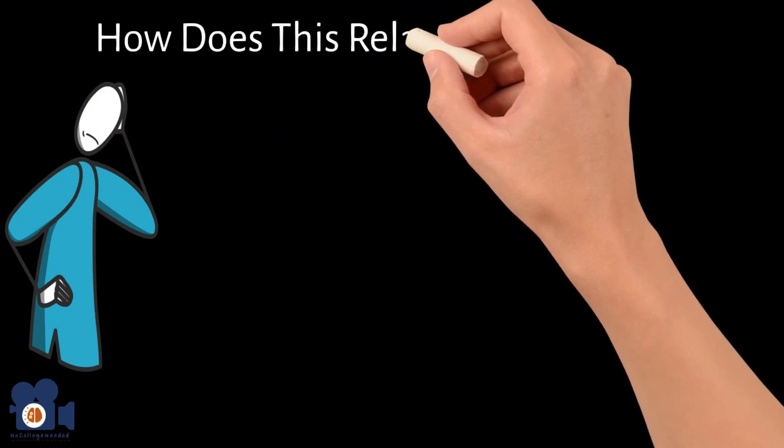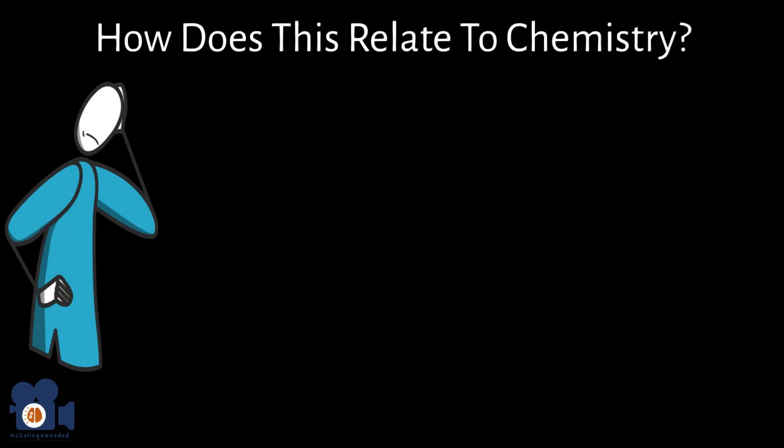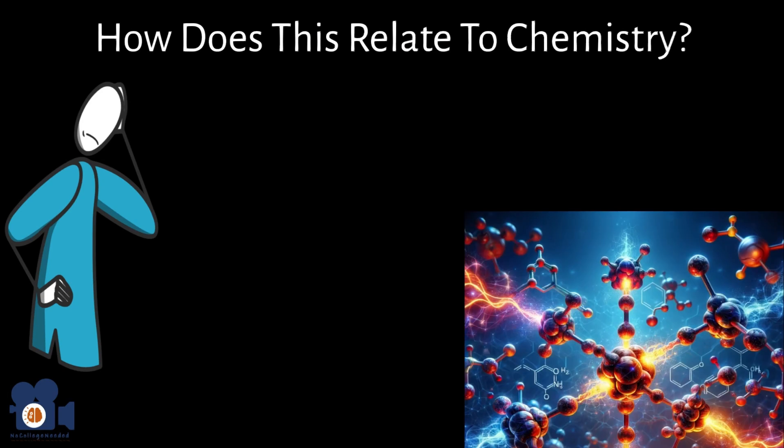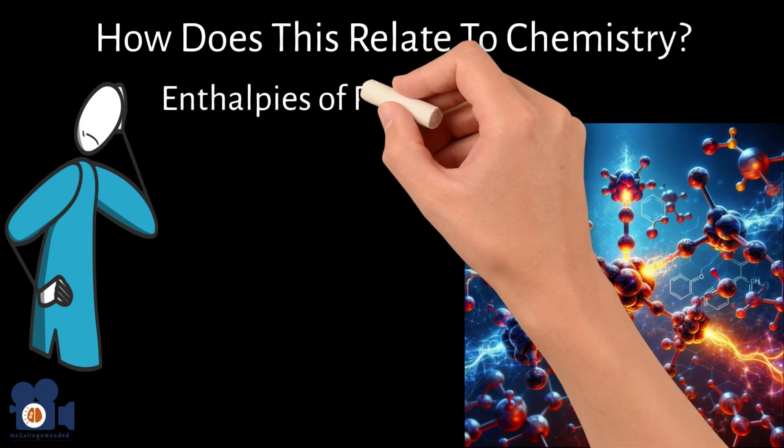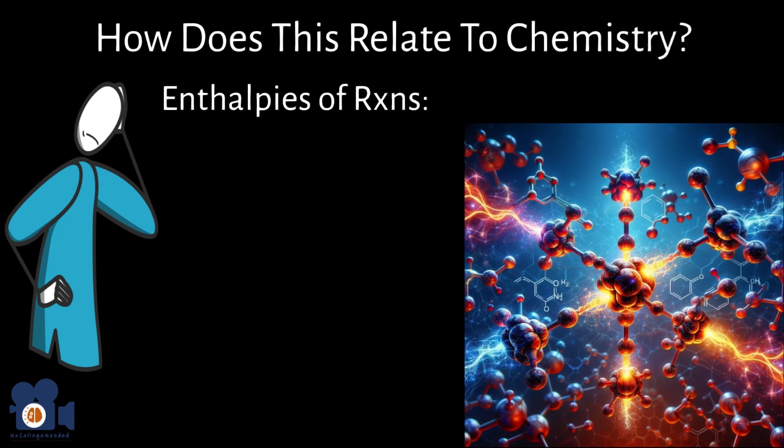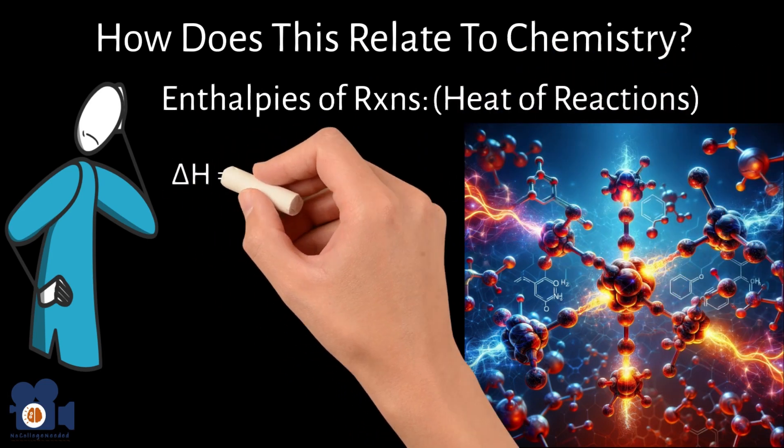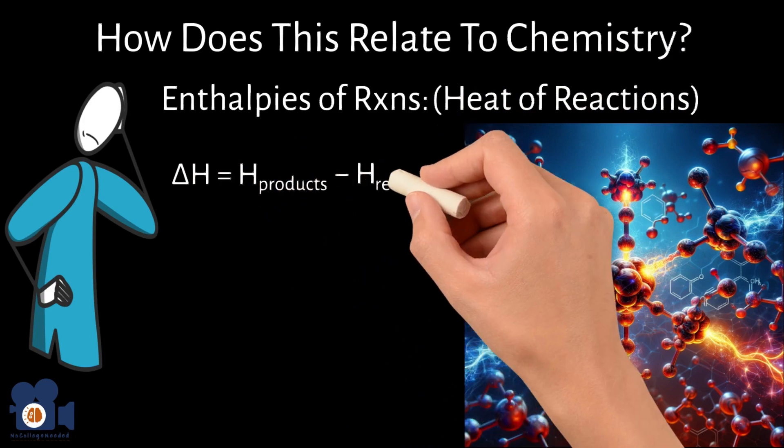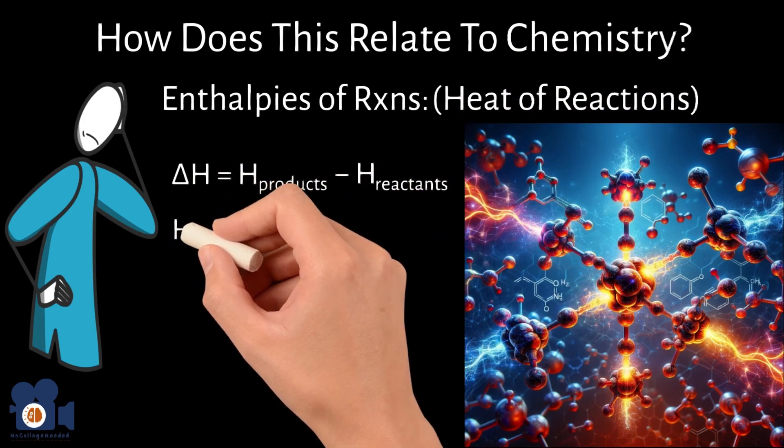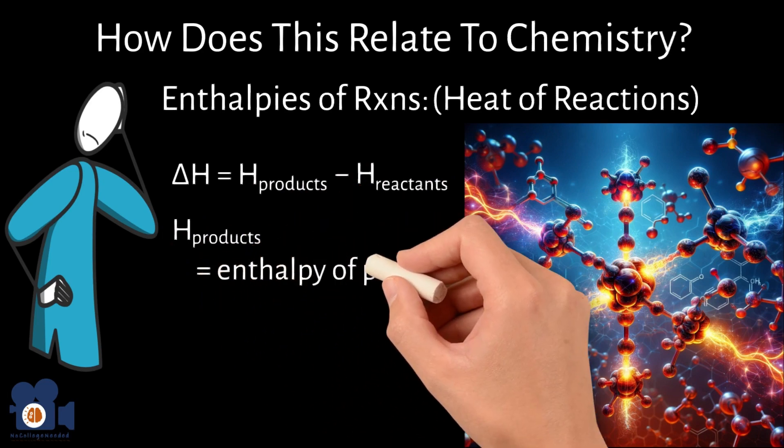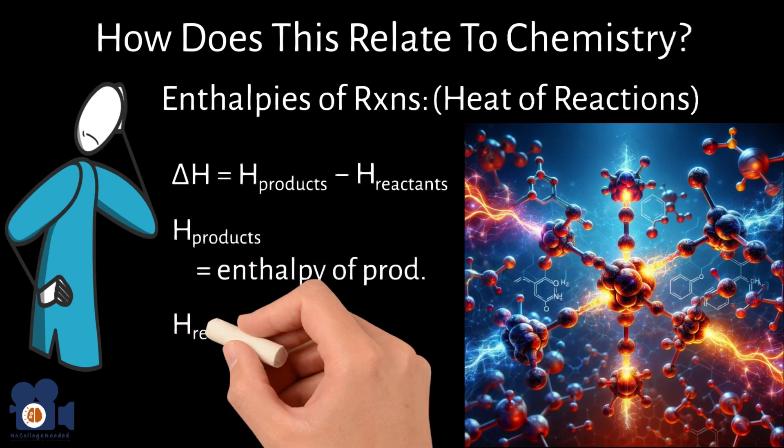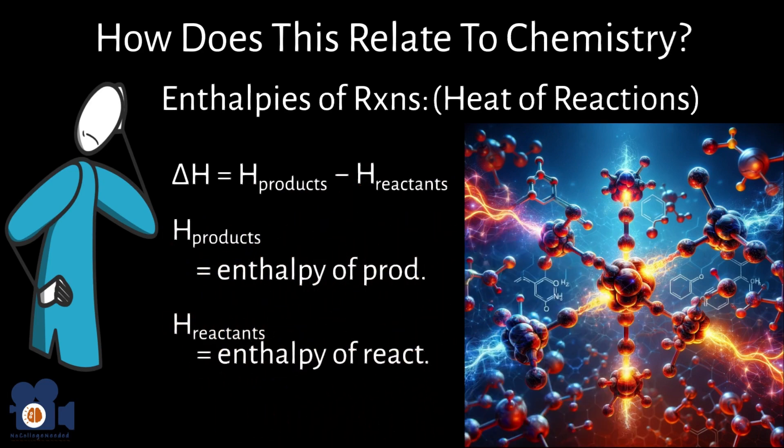All of this might seem like it doesn't relate to chemistry at all, so why then talk about it? I'm bringing this up because during a chemical reaction, there are changes in the heat exchange of the molecules, which we call enthalpies of reactions, sometimes referred to as heat of reactions. Chemists define this as delta H equals H products minus H reactants, where H products is the total enthalpy of the products, and H reactants is the total enthalpy of the reactants.